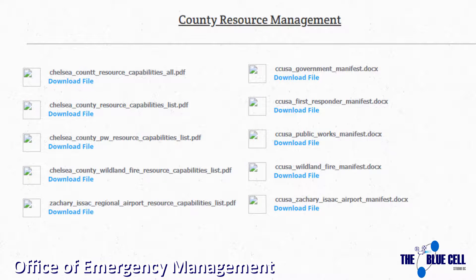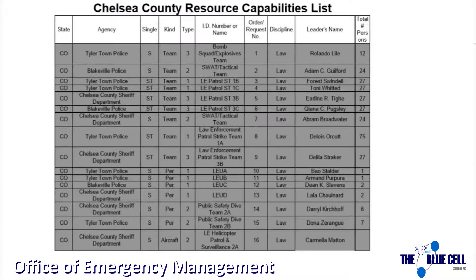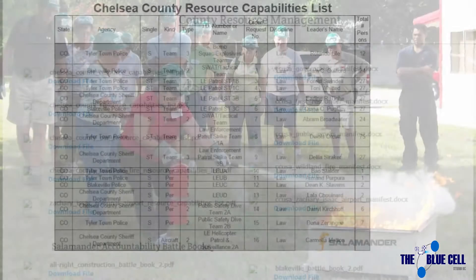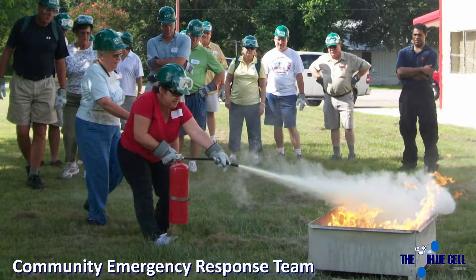Under the Office of Emergency Management tab, you will find key information for disaster response, including one of four FEMA-type capability lists. The Notional Chelsea County Community Emergency Response Team, CERT, is active in all parts of the county.